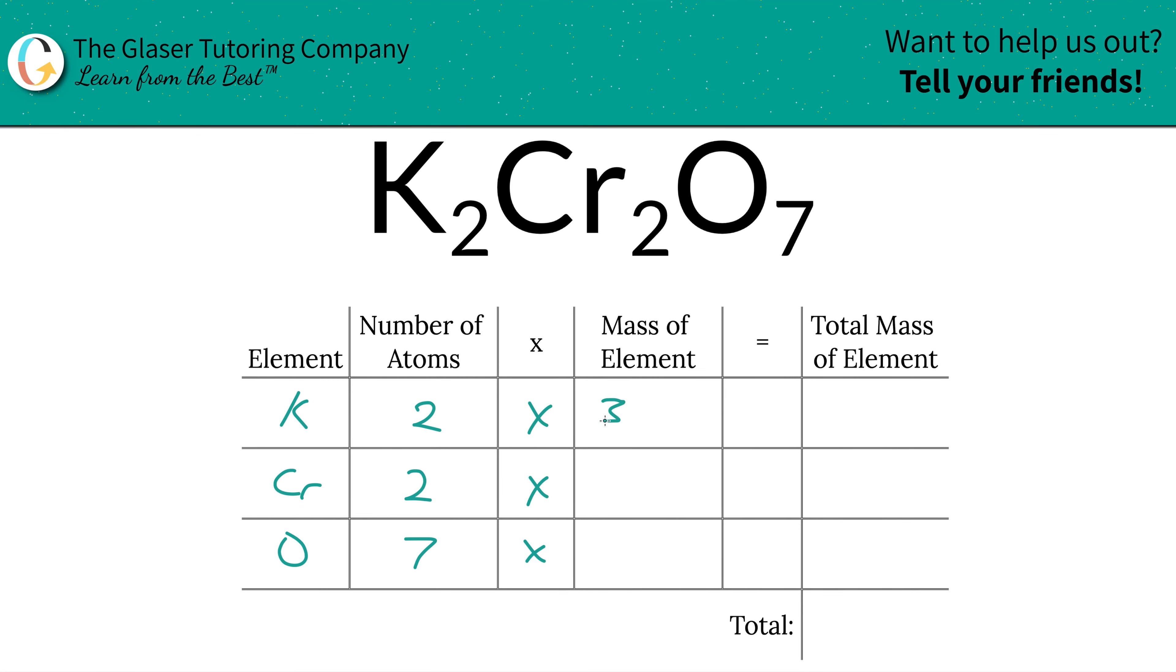So potassium was 39.10, chromium is 52, and then oxygen was going to be 16. Easy enough.